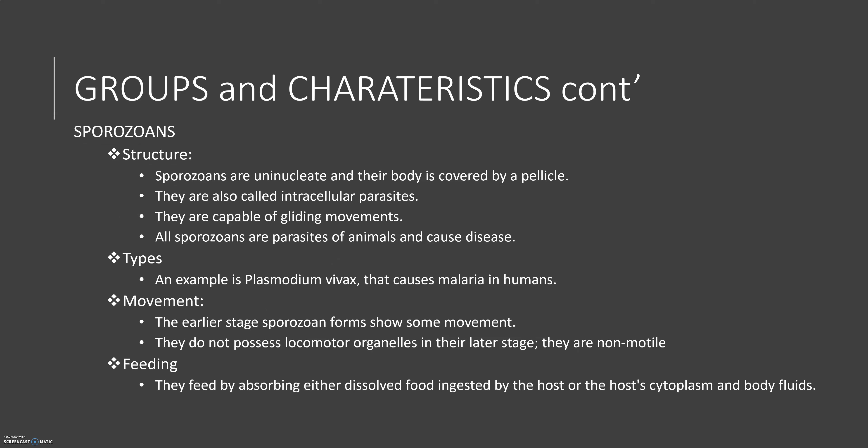The last form of protozoans is the sporozoa. Unlike the other ones, sporozoa do not move — they don't have cilia or flagella for movement. They are mostly immobile; since they do not possess any locomotive organelles, they are non-motile. They feed by absorbing either dissolved food ingested by the host or the host's cytoplasmic fluid, because they mostly live within a host. A common example is Plasmodium, which causes malaria.